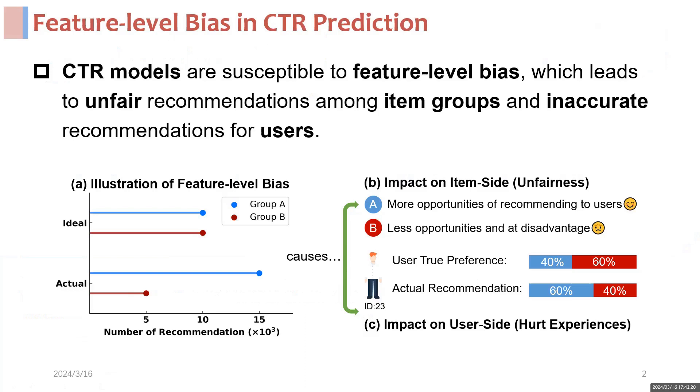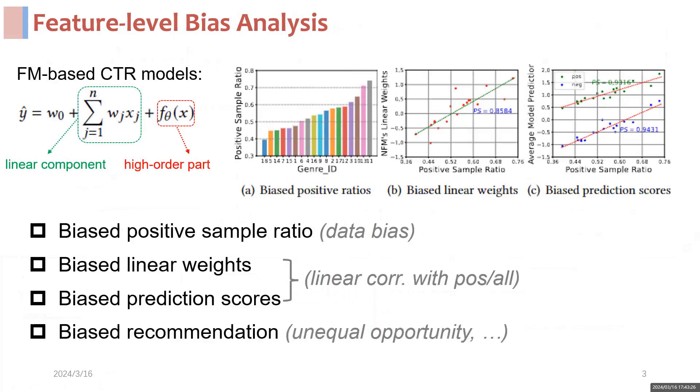To systematically study the cause of feature-level bias, we train two representative CTR models, FM and NFM, on a popular recommendation dataset ML1M.